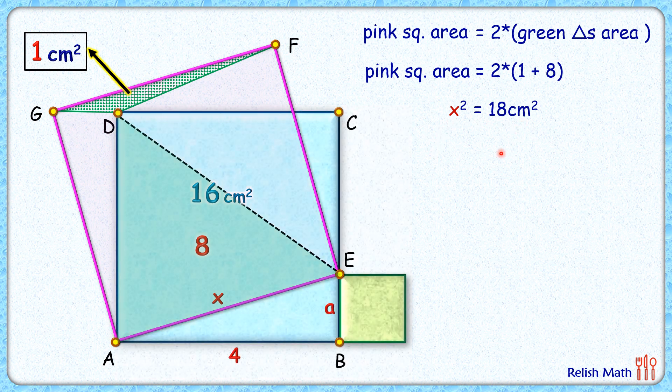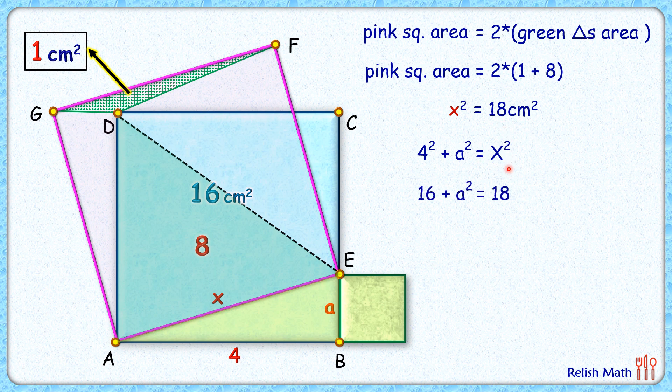Now in the original figure, let's look at this right angle triangle ABE. Applying Pythagoras theorem will get 4² plus a² is x². x² that's 18. So putting this value here and solving it will get a² as 2.